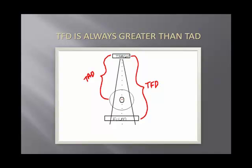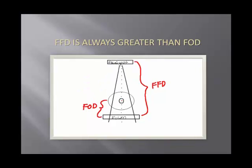In real life, real objects have a size of 1. Anything larger than that is going to be greater than 1, so if it's a true magnification problem, your answer is always going to be greater than 1. Your film-to-focal-spot distance, which is the same as TFD, is always going to be greater than your film-to-object distance — same principle as before.